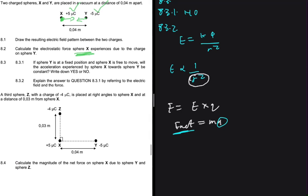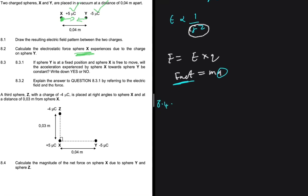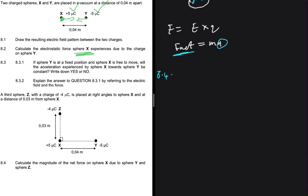Moving to 8.4. So 8.4 says that a third sphere Z with a charge of minus 4 microcoulombs is placed at right angles to sphere X at a distance of 0.03 meters from sphere X. Then let's calculate the magnitude of the net force on sphere X due to sphere Y and Z. So we're looking for the overall magnitude of the net force on sphere X. The way you start this problem, you start with a vector diagram so that you can sort of see what is happening.